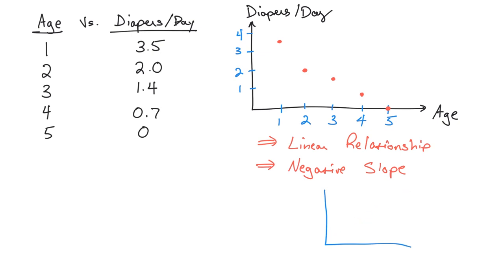Positive slope goes up and to the right. Negative slope goes down and to the right. If you see data sloping down and to the right, it doesn't matter how steep it is — if it's sloping downhill like you could roll a ball down it, you say it has a negative slope. The reason is that rise over run is negative: the rise is down (negative) and the run is to the right (positive). So we say there is a linear relationship between these two variables with a negative slope, and later we'll say there's a correlation, and we'll learn to calculate that number.